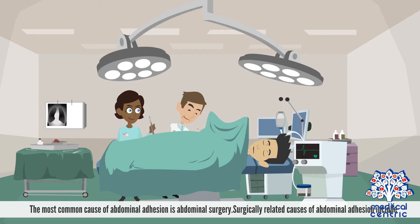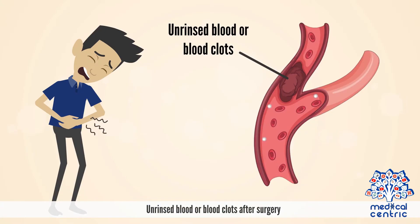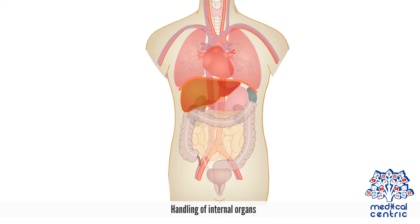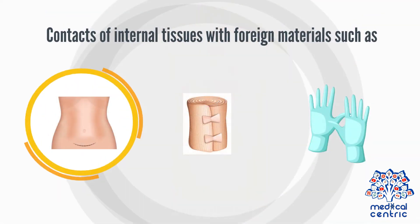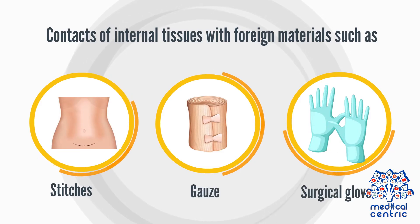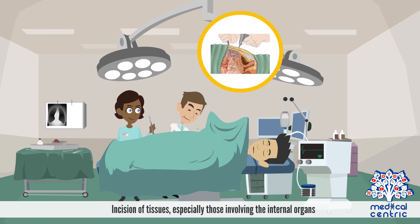Causes. The most common cause of abdominal adhesion is abdominal surgery. Surgically related causes include unrinsed blood or blood clots after surgery, the drying out of internal organs and tissues, handling of internal organs, contact of internal tissues with foreign materials such as stitches, gauze, or surgical gloves, and incision of tissues involving the internal organs.